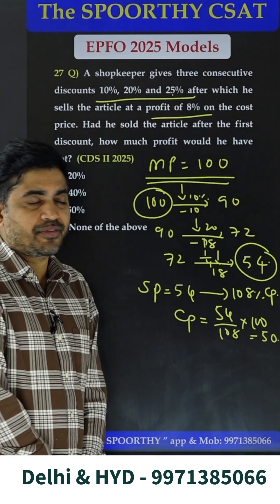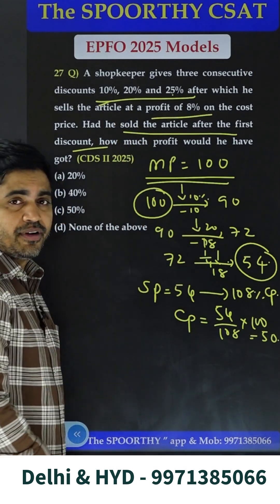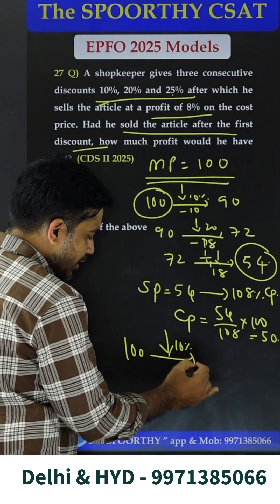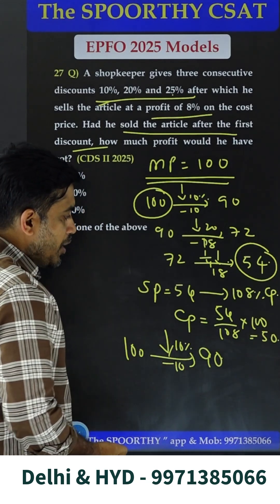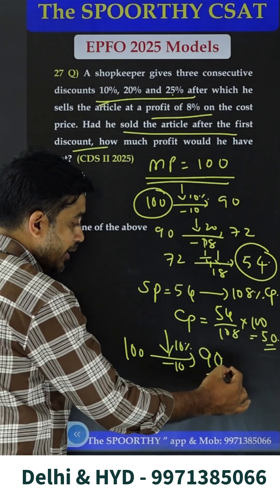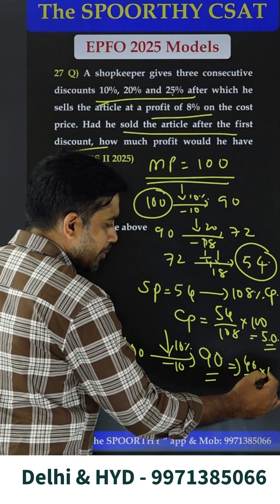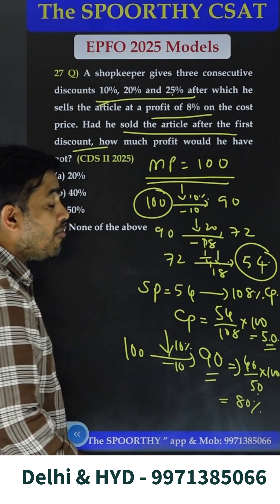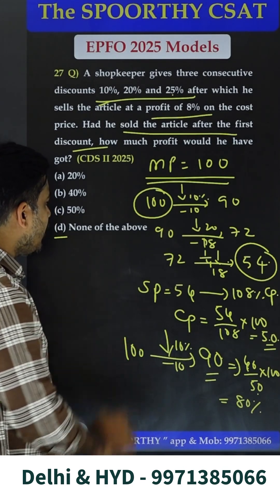Cost price is 50. Now, if you give only the first discount — on 100 you offer only 10% discount — the price becomes 90. Your investment is 50 and you are selling at 90, so the profit is 40 rupees. With respect to cost price 50, that is 40 by 50 into 100, which equals 80%. This final profit percentage is not given in the options, so the answer is option D.